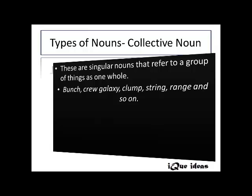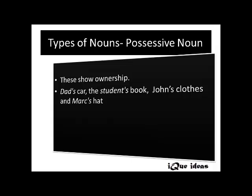The next type is possessive noun. These nouns show ownership. When I say dad's car, the car belongs to dad. The student's book means the book belongs to the student. John's clothes means the clothes belong to John. Mark's hat means Mark is the owner of the hat.